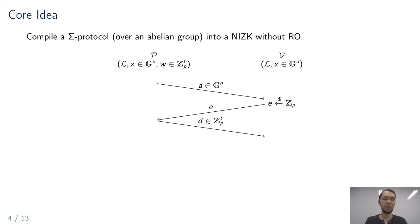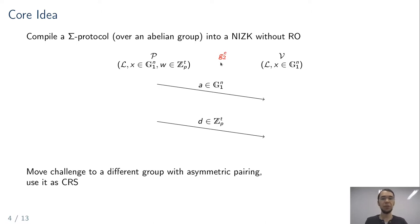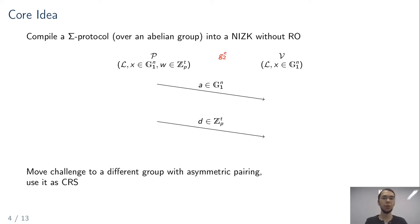Instead of giving E in the clear, we give it in a different group: instead of giving E as the CRS, we give [E]_2 for some generator G2. Now E is in a different group than the first flow, and if the two groups have an asymmetric pairing, verification is still possible since most sigma protocols have a linear verification equation. Correctness in this compiled protocol holds due to the pairing, and the second flow of the prover also has to be in group G2 since it depends on the challenge now present only in G2.